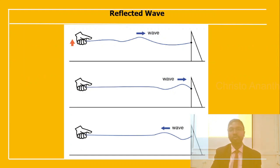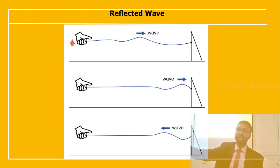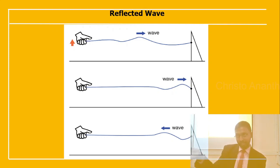However, if the far end of the rope is secured to a solid object at a point prior to the incident wave's total dissipation, the wave will reflect back to the hand. You will see the reflected wave propagating back to the source.